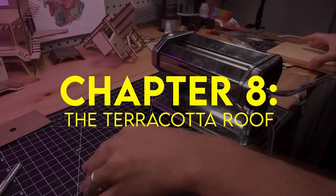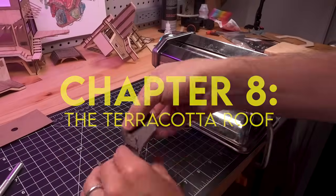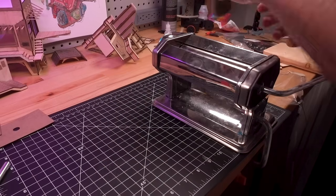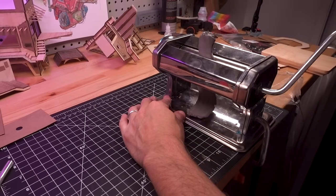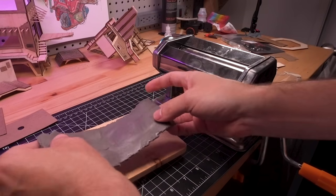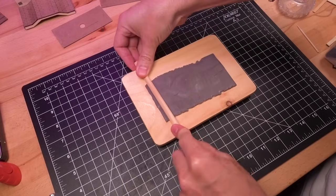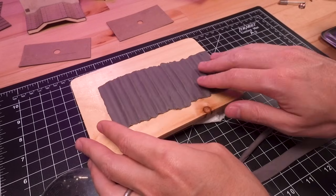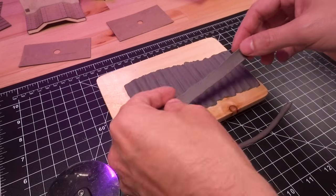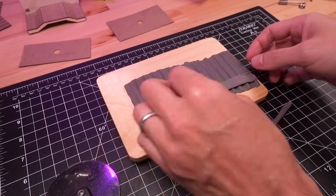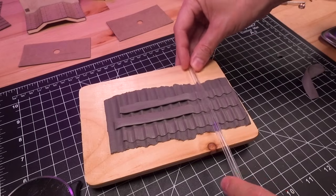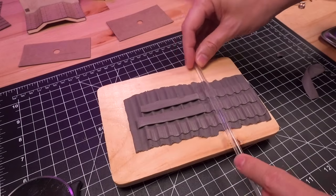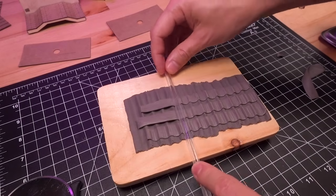There's always that one thing in every build that ends up being a major headache. And for this one, surprisingly, it was the terracotta roof. My initial idea was to make a mold from polymer clay, so I rolled out a thick sheet of it, added indentations with a dowel, then baked. I then used that as a mold to imprint the pattern onto thin strips of clay, but while it felt and looked okay at first, the clay fused together and was impossible to separate.